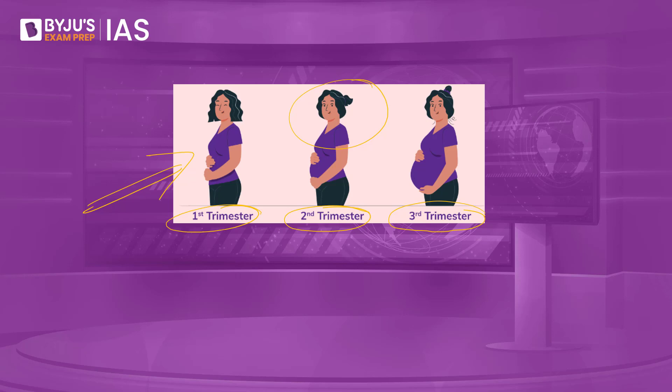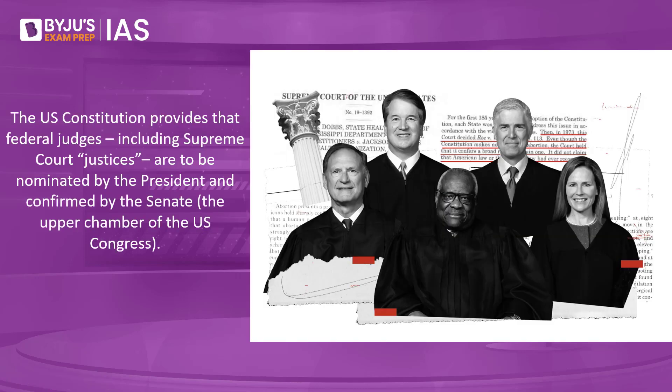Before understanding the likely consequences, we need to understand why this judgment has surfaced now — specifically, the appointment of Supreme Court judges. The US Constitution provides that federal judges, including Supreme Court justices, are nominated by the President and confirmed by the Senate, the upper chamber of Congress. The Constitution does not stipulate the number of Supreme Court judges; that is decided by Congress. Justices hold office for their entire lifetime until they resign, pass away, or are impeached and convicted by Congress.